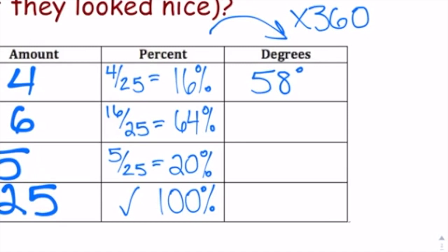When I do the next one, 64% of a circle — 360 degrees — comes out to 230.4, which when rounded is 230. Then 20% of 360 comes out to exactly 72 degrees, no rounding necessary.